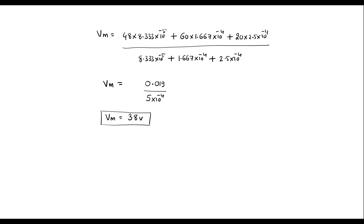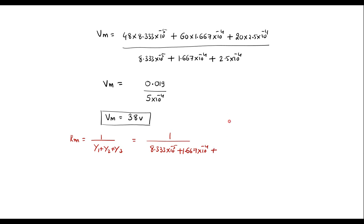Now let us calculate Rm. Rm is calculated using the formula Rm = 1 / (Y1 + Y2 + Y3) = 1 / (8.333×10⁻⁵ + 1.667×10⁻⁴ + 2.5×10⁻⁴). Simplifying this gives Rm = 2000 ohms, that is 2 kilo ohm.